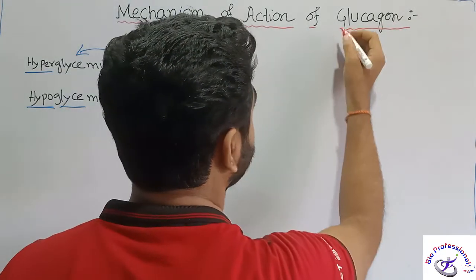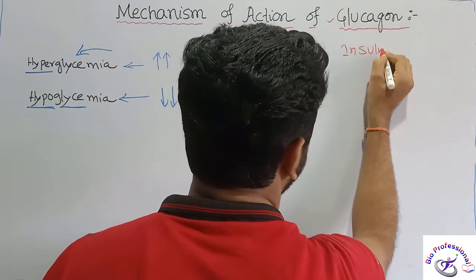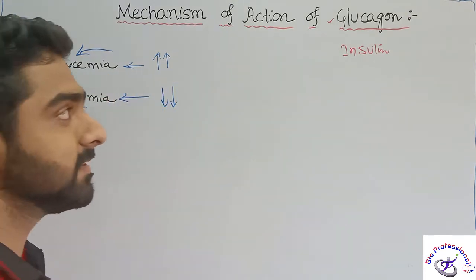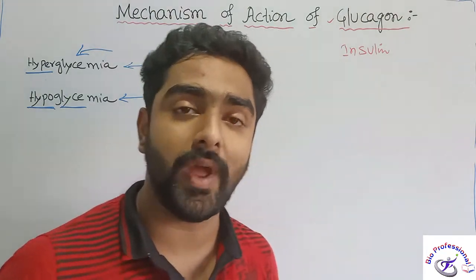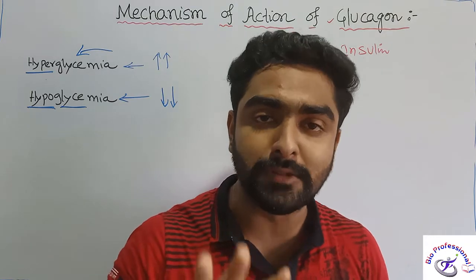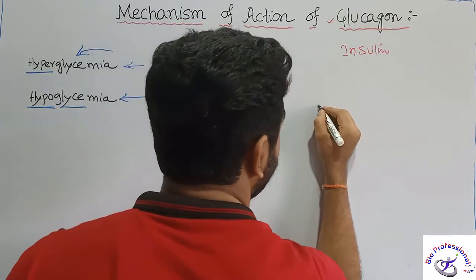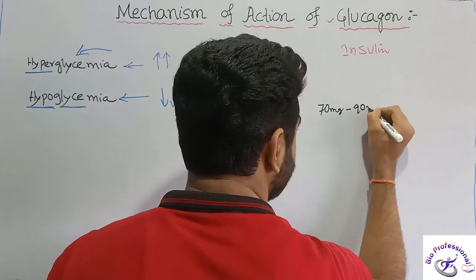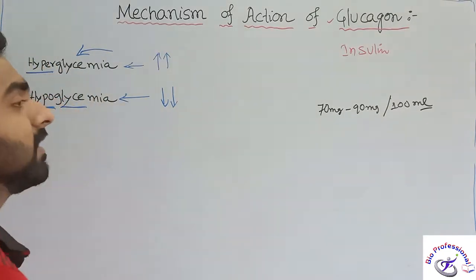We have two hormones — glucagon and insulin. In which category do these belong? Glucagon comes into action when the blood sugar level is low. The normal range of blood sugar level is like 70 mg to 90 mg per 100 ml — that is the normal range to be maintained.